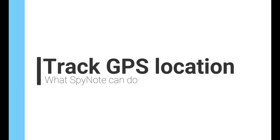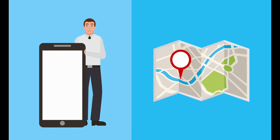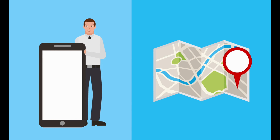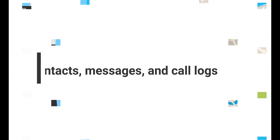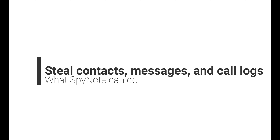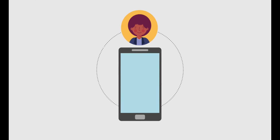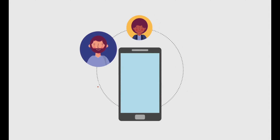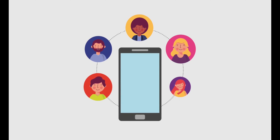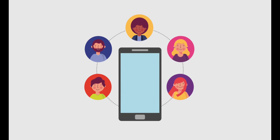SpyNote can track the victim's GPS location without their knowledge, which can be used to track their movements or spy on their whereabouts. It can also steal the victim's contacts, messages, and call logs without their knowledge. This information can be used to spam the victim's contacts or to blackmail the victim.